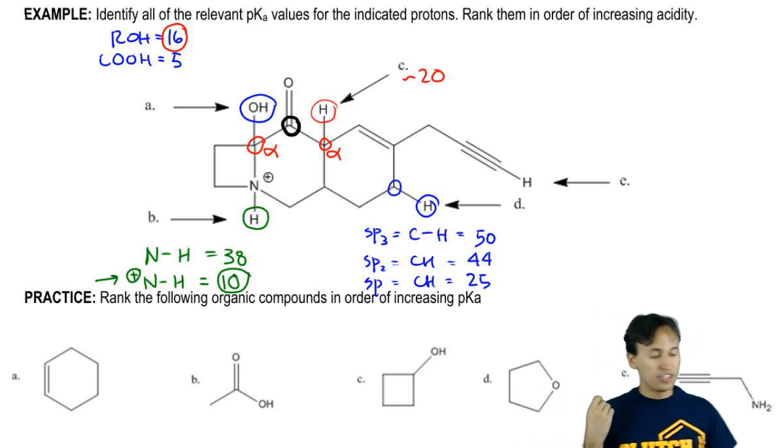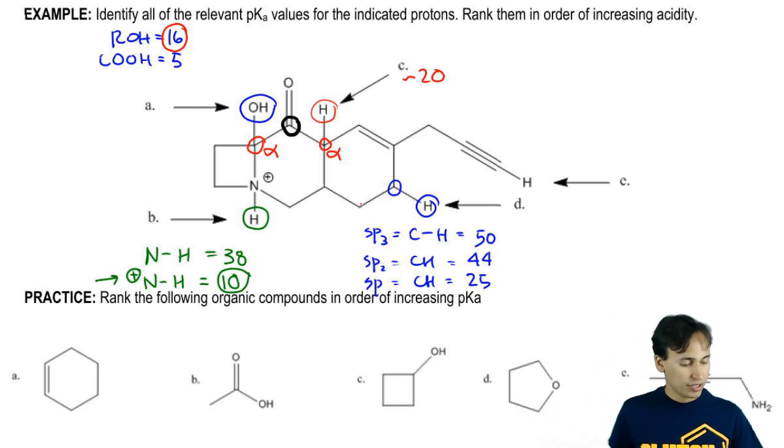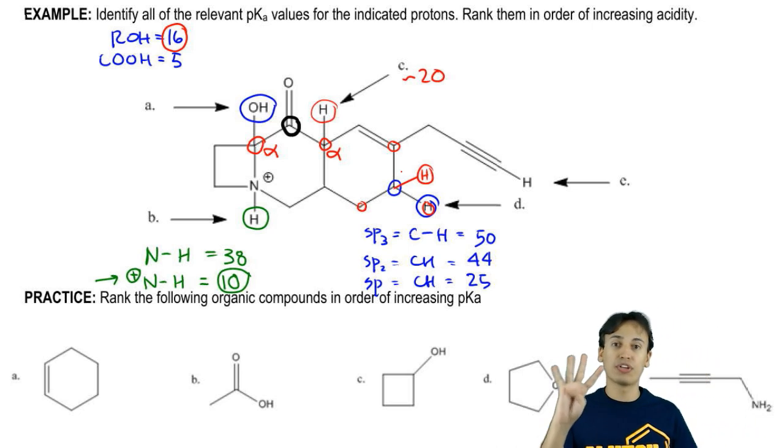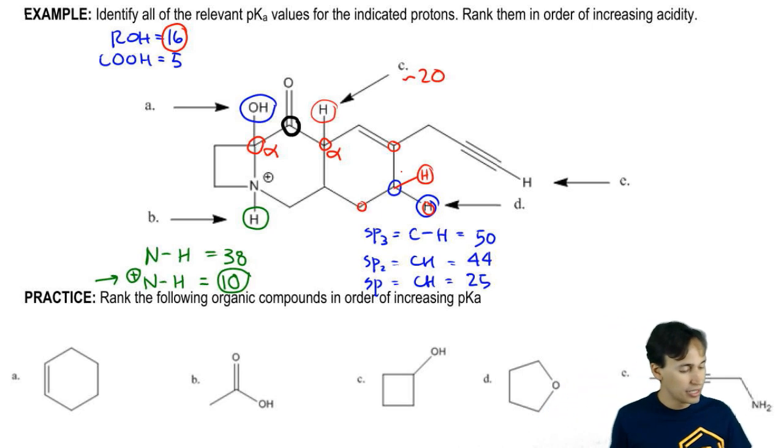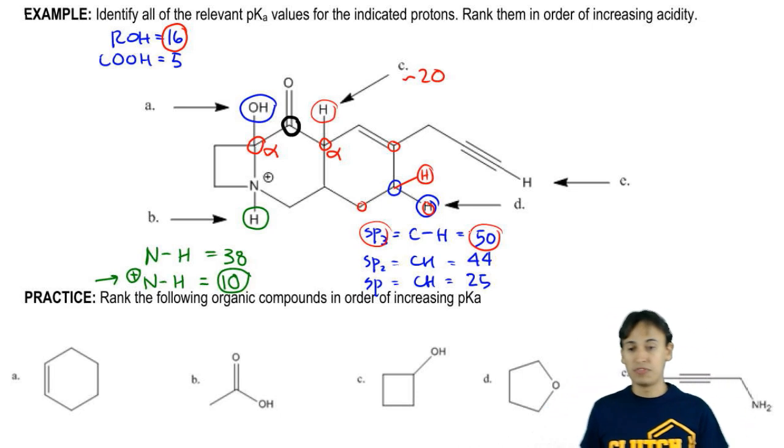So you look at the groups. This blue carbon has an atom here, an atom here, an atom here and then it also has another H here. So that counts as four groups because that's four different atoms or four atoms total coming off of the blue carbon. That means this is SP3 and it has a pKa of about 50.